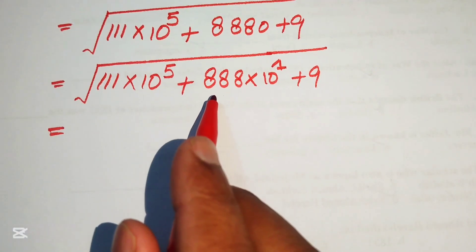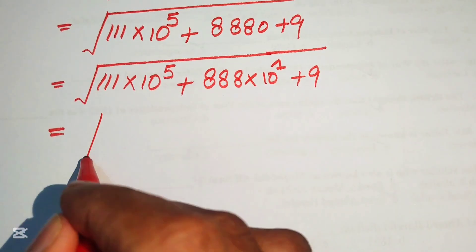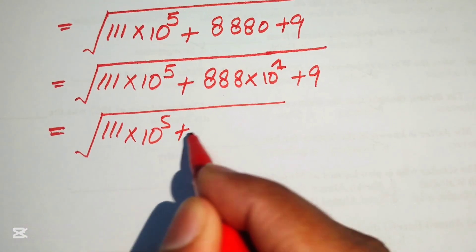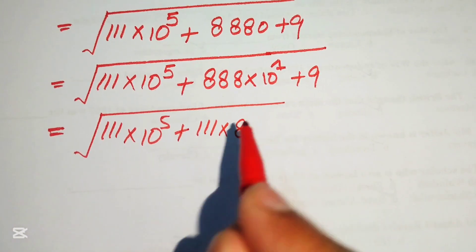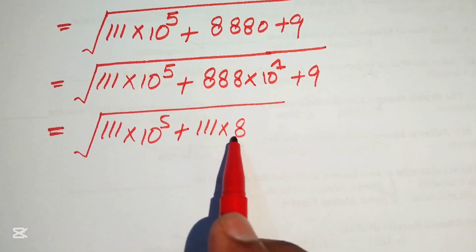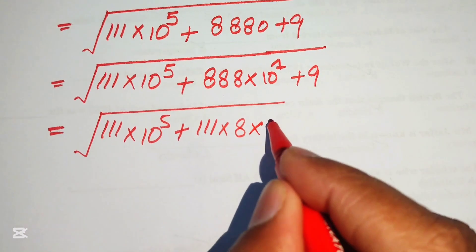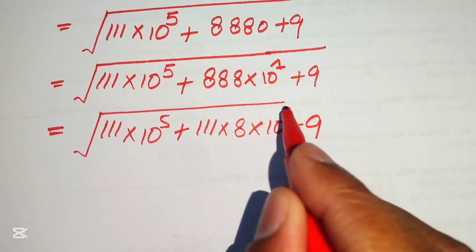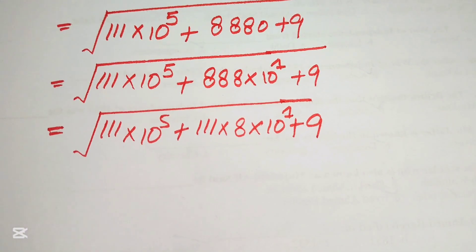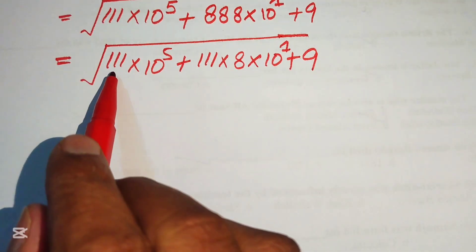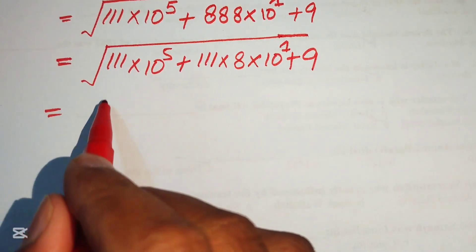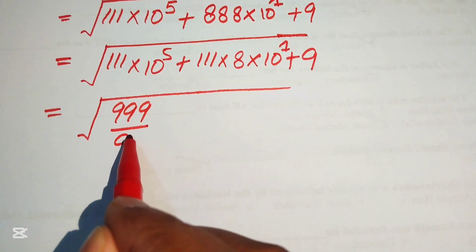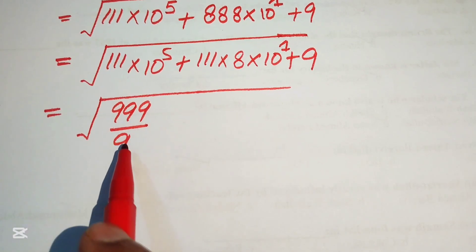So now it is time to break triple eight (888). We write it as a square root of triple one (111) multiplied by ten raised to power five, plus triple one (111) multiplied by eight — because when you multiply triple one by eight you get triple eight (888) — and it is multiplied by ten raised to power one, plus triple one (111) by nine. Since both terms involve triple one, we write triple one as triple nine (999) divided by nine — when you cancel these two terms you get triple one.